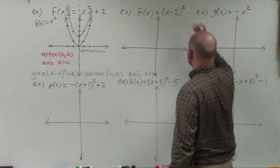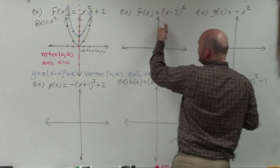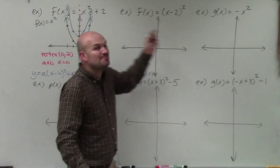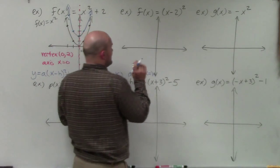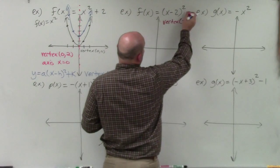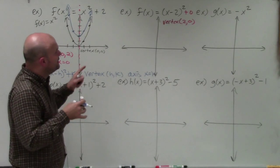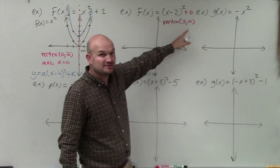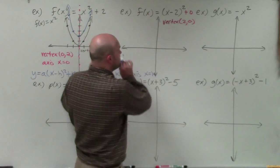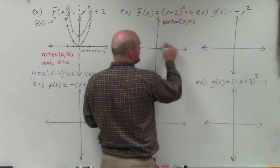In this next example, I'm subtracting 2 inside the function. The important thing to remember is it's x minus h, so x minus 2 means h is equal to 2 — which is a very common mistake for students. So the vertex is going to be 2 comma 0. Rather than shifting the graph negative 2, h is actually positive 2 because it's x minus h, x minus 2, so I'm shifting the graph two units to the right. My new vertex is at 2 comma 0.